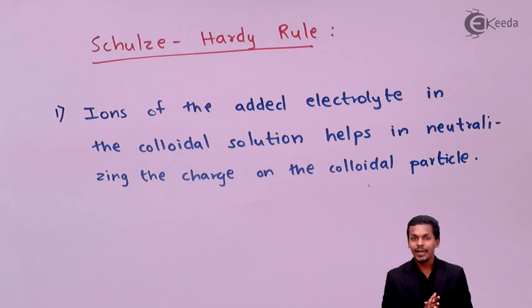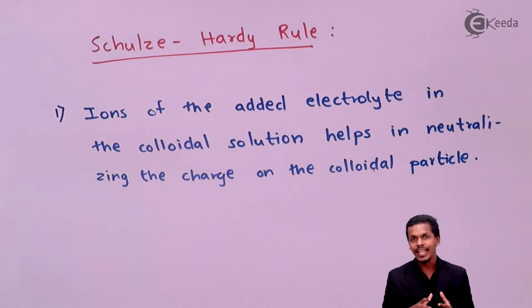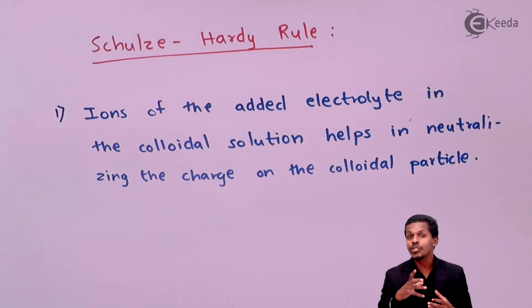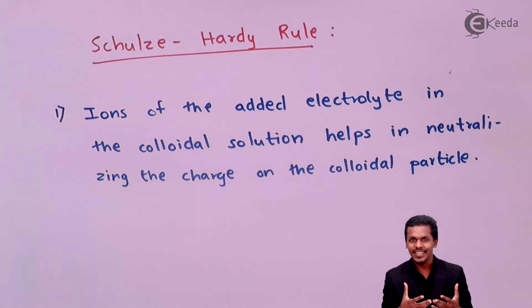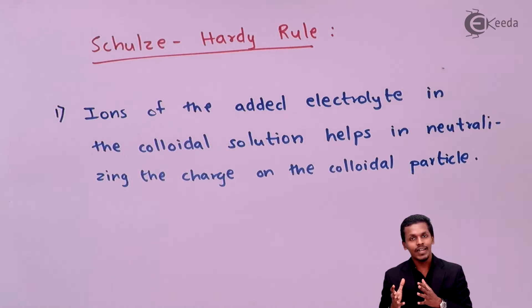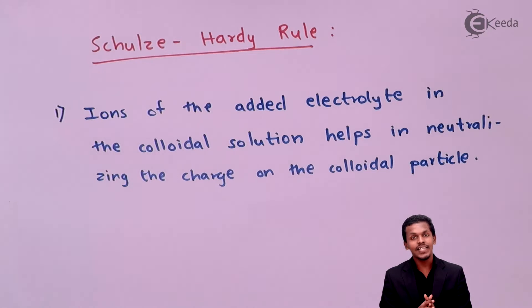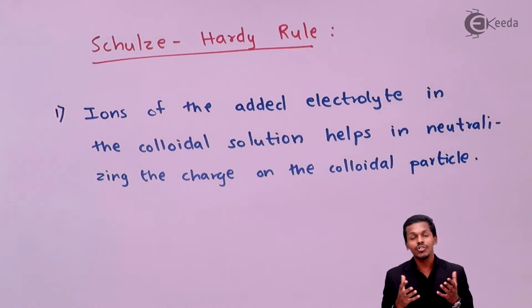For example, if the colloidal particle carries a negative charge, we need to remove that charge by adding an electrolyte whose cation — say Na⁺ — associates with the negatively charged colloidal particle, neutralizing its charge. The cations of the electrolyte not only remove the charge but also associate with the colloidal particle, making it a larger particle. This is the essence of the first Schultz-Hardy rule.